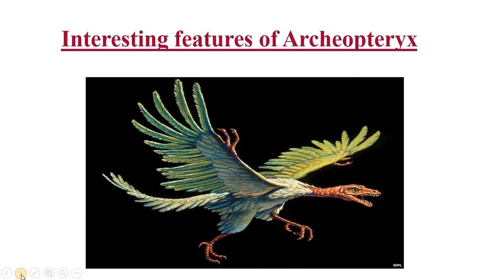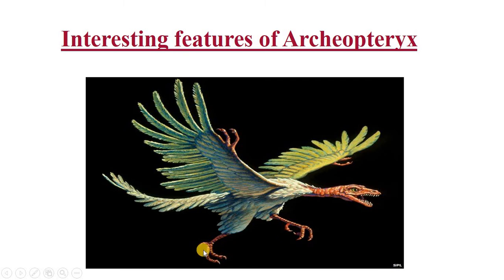This is another diagrammatic representation where you can see the rectrices — tail with rectrices and remiges. The forelimbs are modified to wings which have remiges, though not as clearly as in the case of birds where feathers form a sheet-like structure. Here they are present as remiges on the wings and rectrices on the tail. The legs show three toes pointing forwards and one toe pointing backwards. The head is large with teeth, and there is a long neck. Digits are also present in the forelimbs — a character not found in birds, but feathers are present.